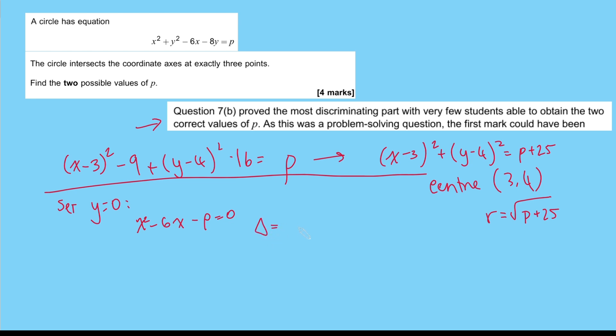So the discriminant here is 6², that is 36 minus 4×1×(-p). Or in other words, 36 + 4p. And if you make that zero, that just tells us that p = -9. So that there is one of our solutions for p.